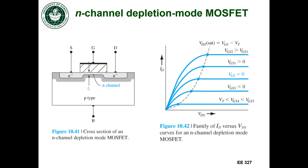Except that when there's a zero gate to source voltage, there's already a channel between the drain and the source, so I can already conduct current between the drain and the source. So that's this curve here.